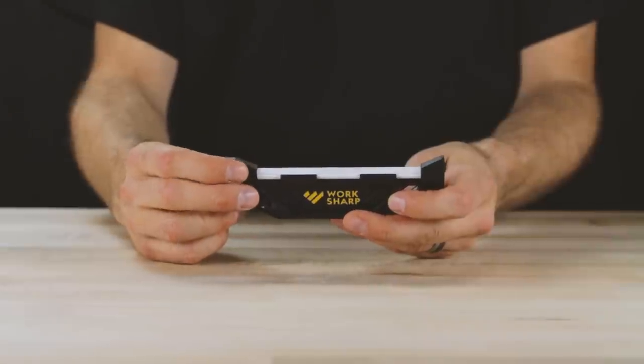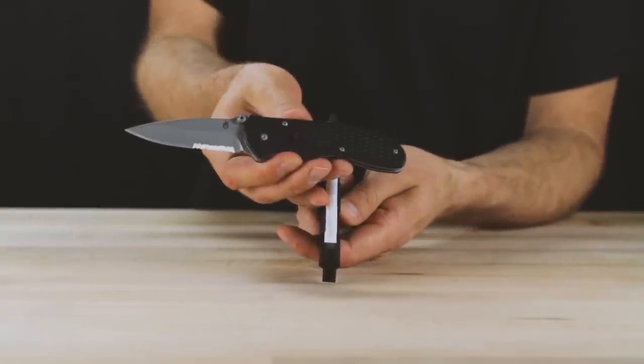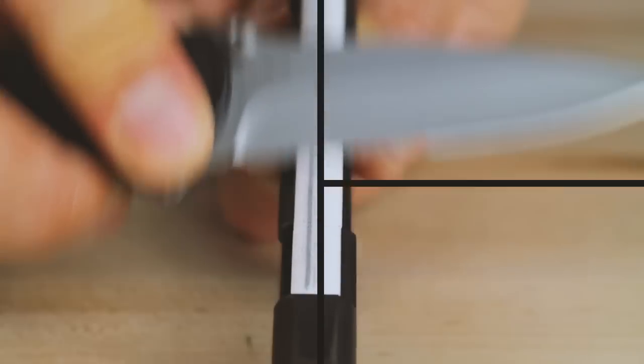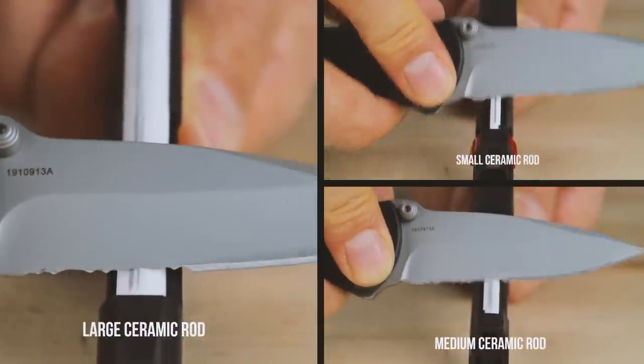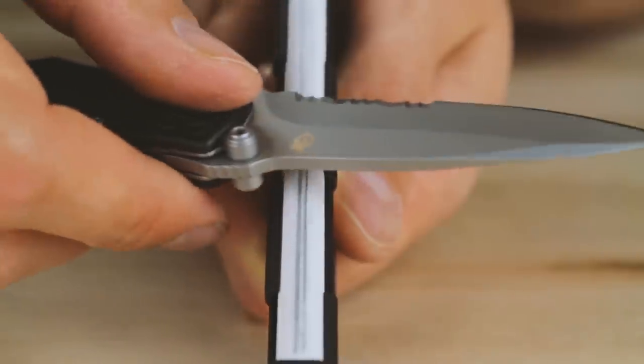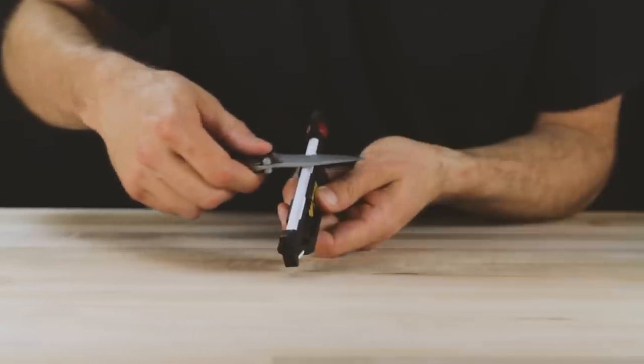Sharpening serrations. Select the ceramic rod size that best fits the serration to be sharpened. Lay ceramic flat to the bevel side and stroke 8 to 10 times. Use large ceramic rod on fine setting to remove the burr on the flat side of the blade.